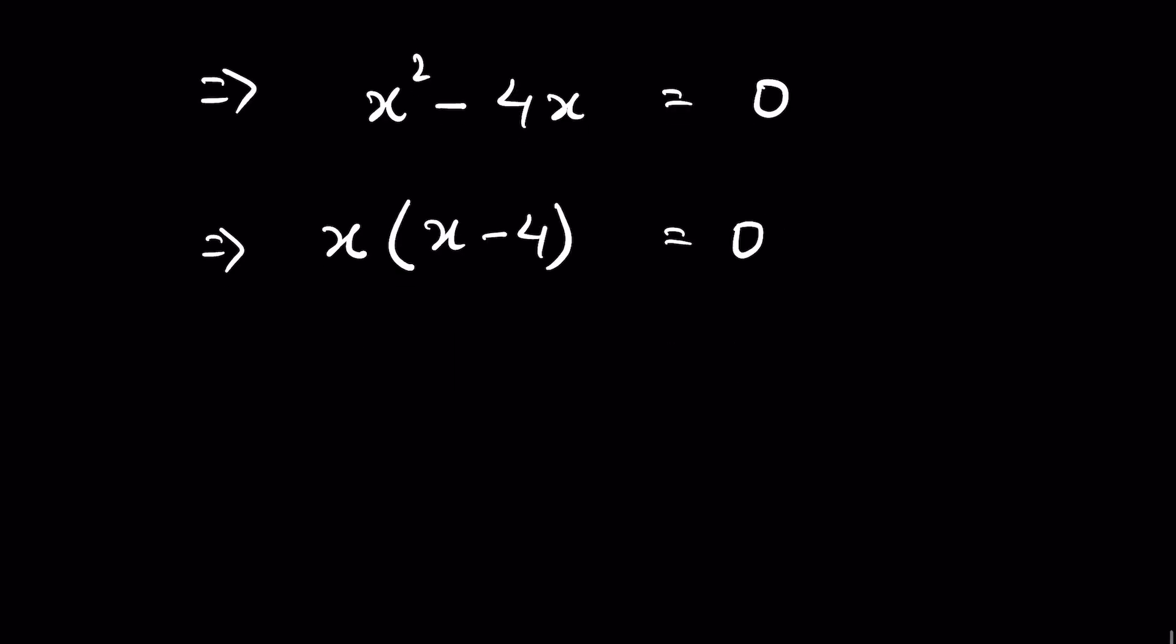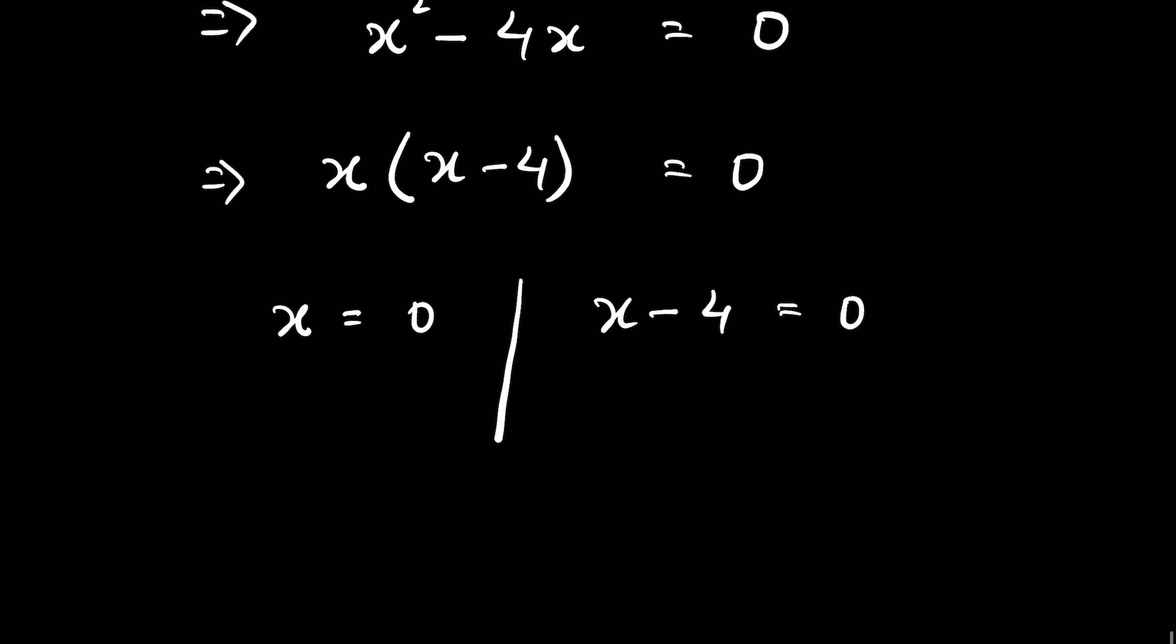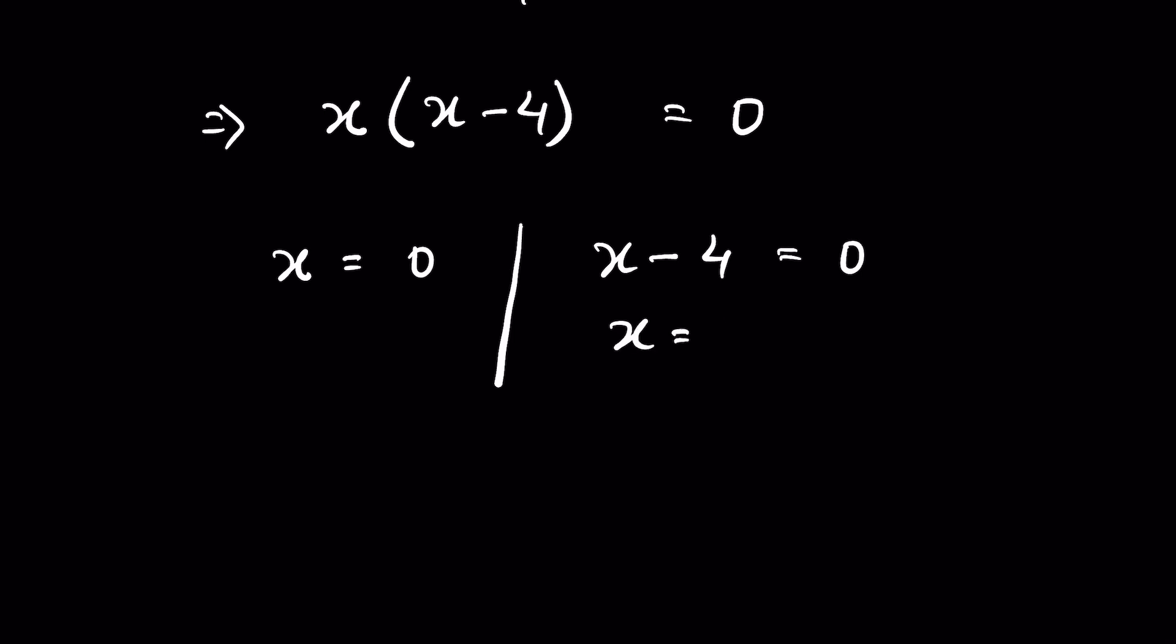That gives us two solutions for x. First, when x equals 0. Second, when x minus 4 equals 0, so in that case x equals 4.